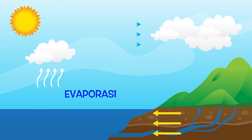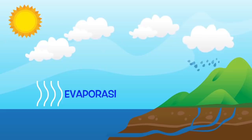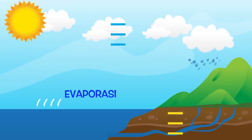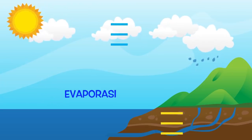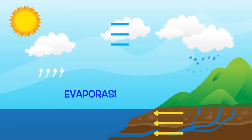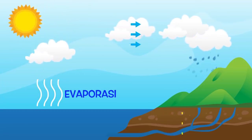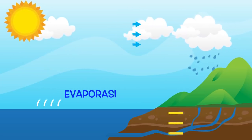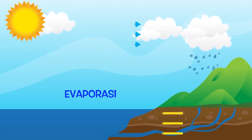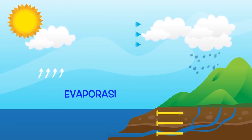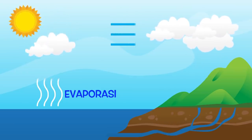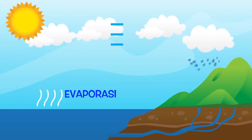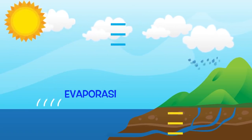Air dari beragam jenis sumber air, seperti laut, danau, sungai, tanah, dan lain sebagainya, itu berubah menjadi uap air, kemudian naik ke atas sampai ke lapisan atmosfer. Semakin besar energi panas dari matahari yang sampai ke permukaan bumi, maka laju evaporasi juga akan semakin besar loh Sobat.